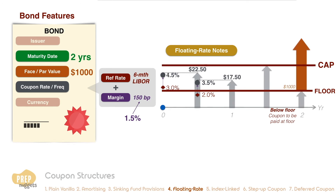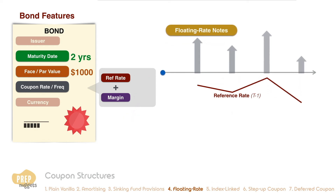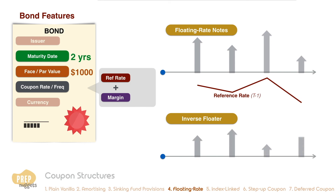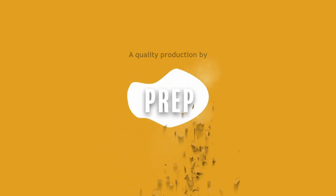In essence, floating rate notes have coupon payments that correlate with the reference rate. However, that does not always have to be the case. An inverse floater has negative correlation with the reference rate — the coupon rate increases when the reference rate decreases, and decreases when the reference rate increases.